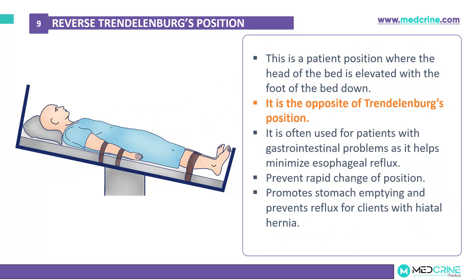Reverse Trendelenburg position is a patient position whereby the head of the bed is elevated with the foot of the bed down — the opposite of Trendelenburg position. This position is often used in patients with gastrointestinal problems and helps to minimize cases of esophageal reflux. It prevents rapid change of positions, promotes stomach emptying, and prevents reflux for patients who have hiatal hernia.